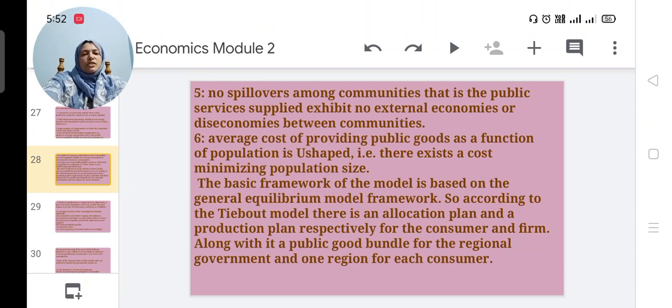Sixth one is average cost of providing public goods as a function of population is U-shaped, that is there is a cost minimizing population size. The basic framework of this model is based on general equilibrium model framework. So according to the Tiebout model, there is an allocation plan and a production plan respectively for the consumer and the firm.